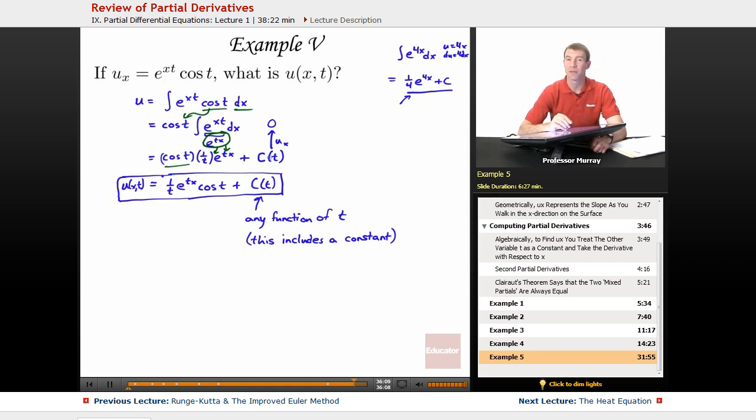And normally I would tack on an arbitrary constant here, but since I'm doing the opposite of a partial derivative, I can tack on any function of t, because any function of t would be treated as a constant when you take the partial derivative, so this would be treated as a constant when taking the derivative with respect to x, when finding u sub x. So any function of t could be included there, and so I'm just going to include that arbitrary function of t, c of t, instead of including an arbitrary constant. And I can think of an arbitrary constant being built into it. So my final answer there is what I got from the integral plus any arbitrary function of t.